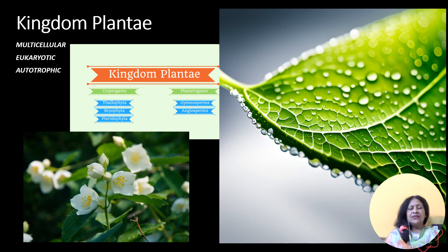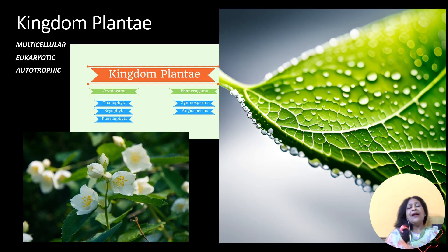Comes to the last, the pteridophyta. These pteridophytes do have leaves but in the form of leaflets. The under surface of the leaves bears spores. Comes to the flowering and the seed-bearing plants.